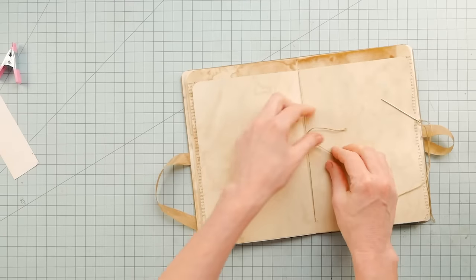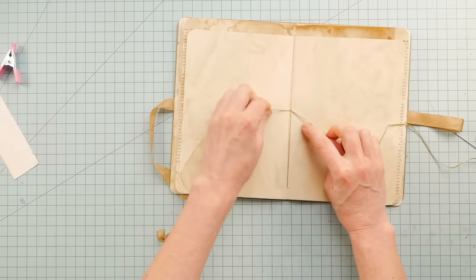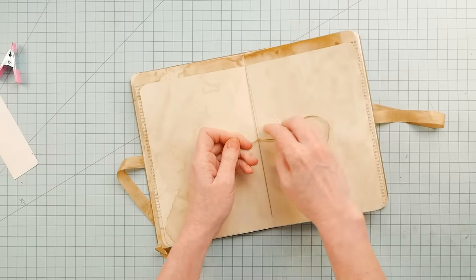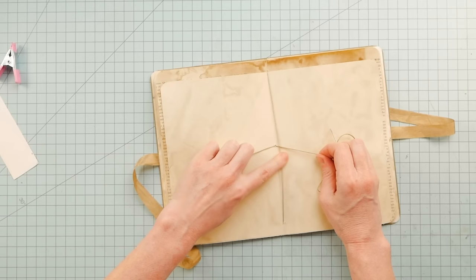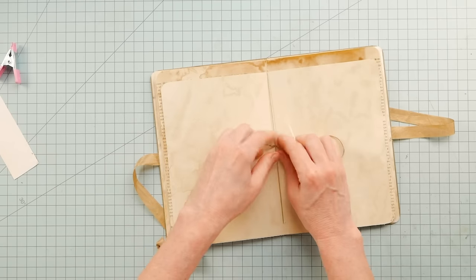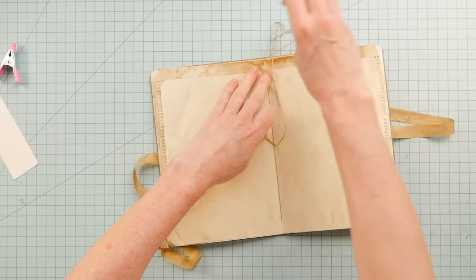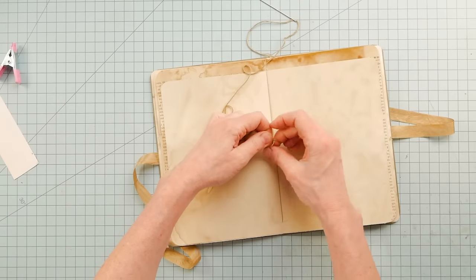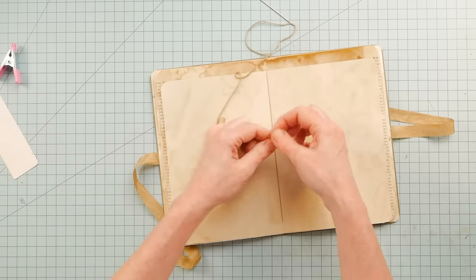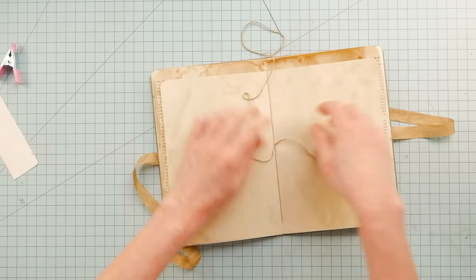And now we just go back through the middle hole again, like so. Now I can take that off. And I like to make sure that the tail that we started with, and then the needle that just came through, that one is on one side of this long stretch, and one is on the other side. Make sure it's snug, but not so tight that it will buckle the cover. And then I just tie just a regular square knot, should be just fine.